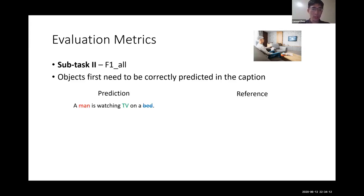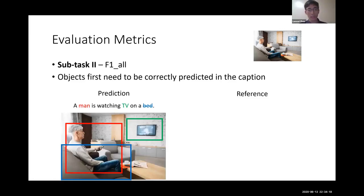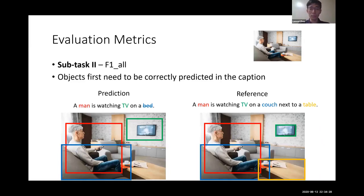The prediction and the reference. The model output 'a man is watching TV on a bed' with corresponding boxes. In the reference, we have 'a man is watching TV on a couch next to the table' and the bounding boxes.